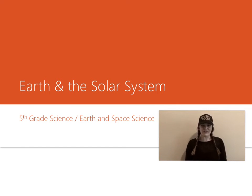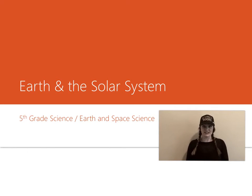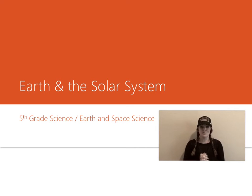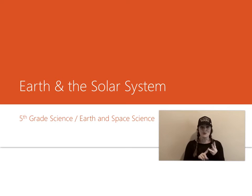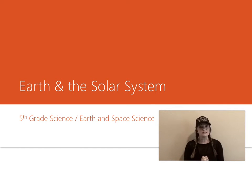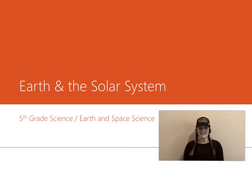Howdy folks! Welcome back to our fifth grade science series. Today we get to start Earth and Space Sciences, so go ahead and make your third section in your science notebook. Remember we started with physical science, we moved to life science, and now we're going to end this with Earth and Space Sciences. Today we'll talk about rotation and revolution, then some about the sun and the patterns it has in the sky, and then we'll end talking about shadows.